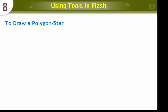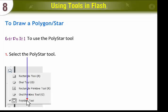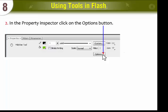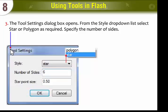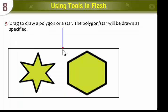To draw a polygon or star using the Polystar Tool, select the Polystar Tool. In the Property Inspector, click on the Options button. The Tool Settings dialog box opens. From the Style drop-down list, select star or polygon as required and specify the number of sides. Click the OK button, then drag to draw a polygon or a star. The polygon or star will be drawn as specified.